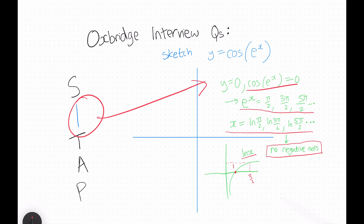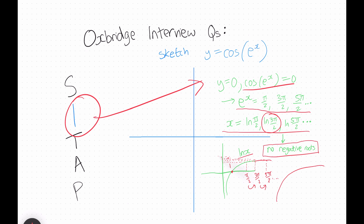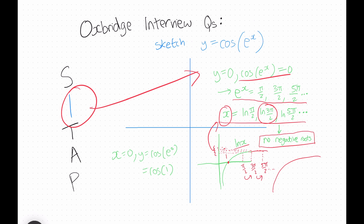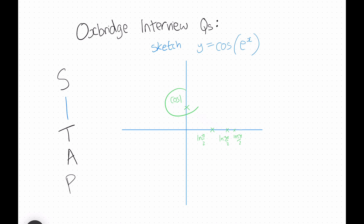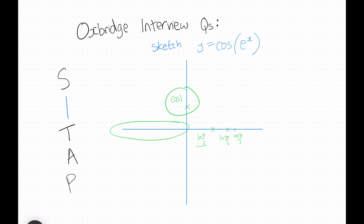The ln x graph has a tapering-off effect: plotting ln(pi/2), ln(3pi/2), ln(5pi/2) and so on, the y-values get closer and closer together. Since these y-values represent the roots of our original equation, the roots get more and more squished together. We also know that when x is 0, y equals cos(e^0) = cos(1), so the y-intercept is cos(1). The positive roots are ln(pi/2), ln(3pi/2), ln(5pi/2) and so on, getting closer together.